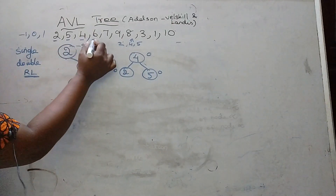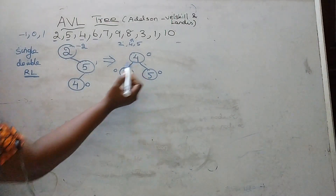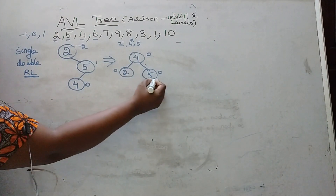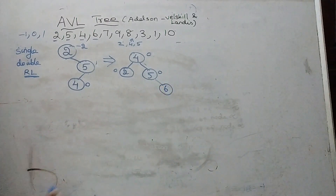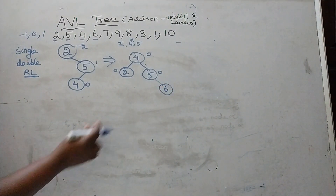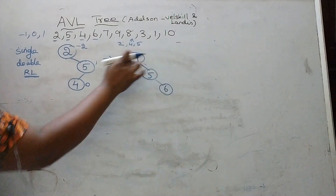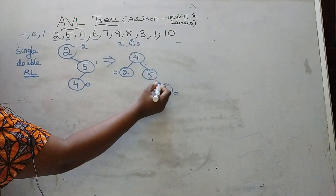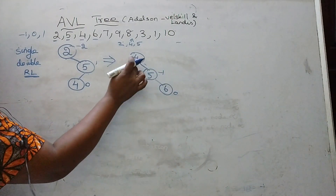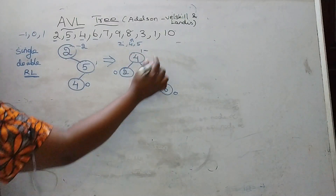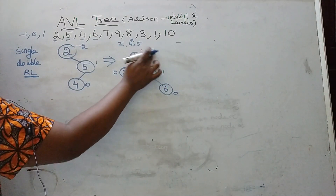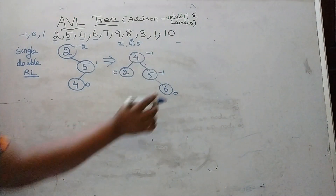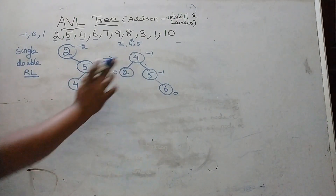Now we are going to insert element 6. Compare 6 with root 4: 6 is greater, go right. Compare 6 with 5: 6 is greater, so place 6 as the right child of 5. After inserting 6, the balance factor values are: node 6 has 0, node 5 has minus 1, and node 4 has minus 1. The tree is still balanced because only values of 0 and minus 1 exist.